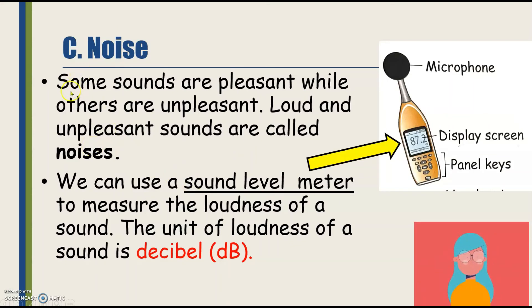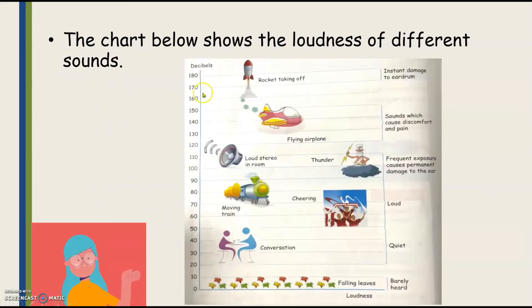Noise. Some sounds are pleasant while others are unpleasant. Loud and unpleasant sounds are called noises. We can use a sound level meter to measure the loudness of a sound. The unit of loudness of a sound is decibel. The chart below shows the loudness of different sounds.